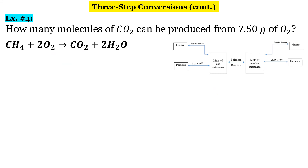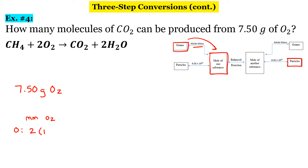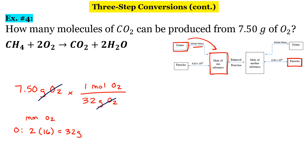In this final example, we are again going to be given grams and we're working our way to molecules. Molecules are also particles, so we're going from grams to particles. We start with what you're given: 7.50 grams of O2. We're going to convert that to moles using the molar mass. For oxygen there are two of them — each one is 16 — so I get 32 grams per mole. There are 32 grams of O2 for every one mole of O2. Our next step is to use that mole ratio to go from moles of oxygen to moles of carbon dioxide.